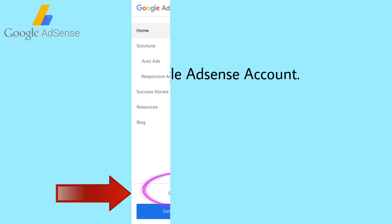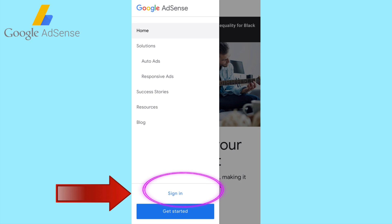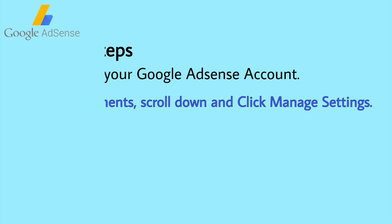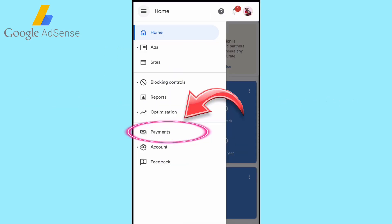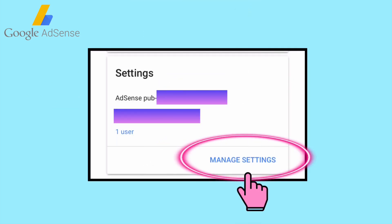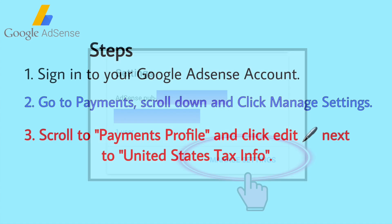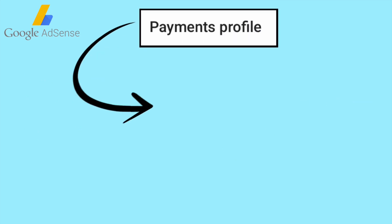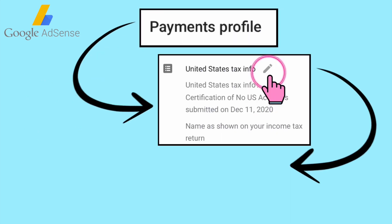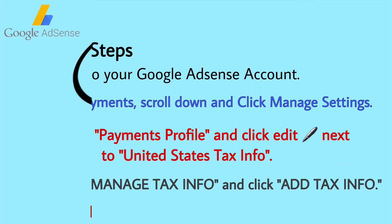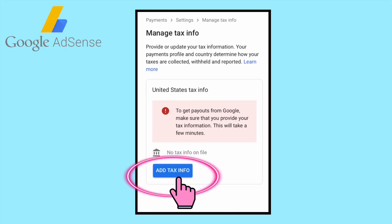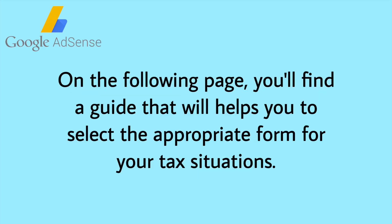Step number one: sign in to your Google AdSense account. Step number two: go to Payments, scroll down, and click Manage Settings. Step number three: scroll to Payments Profile and click Edit next to United States Tax Info. Step number four: tap Manage Tax Info and click Add Tax Info on the following page.